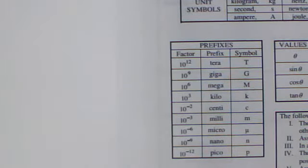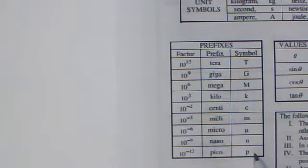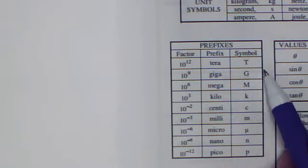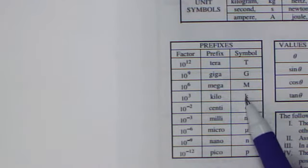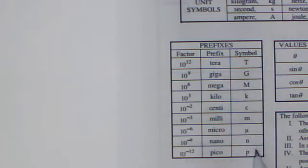If you're working on conversions, you can add any base unit that you want with this. Teragram, terameter, gigameter, megasecond, kilometer, centigram, you can add any base word with this. These are just prefixes from the metric system.